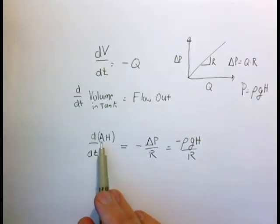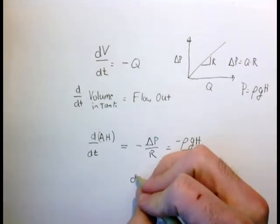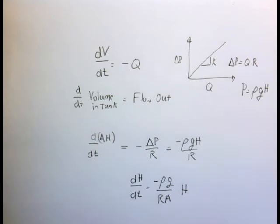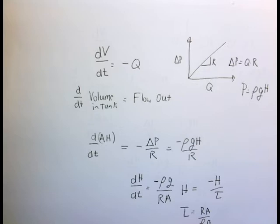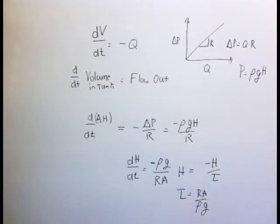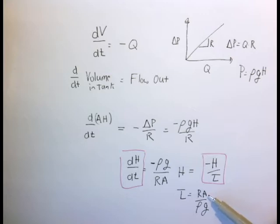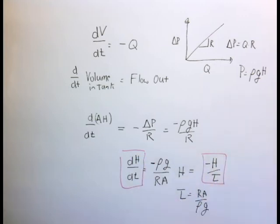Since the area is constant, we can move it inside or outside the derivative, and we can rewrite the expression as: the time rate of change of height equals -ρg/(RA) times H, or equivalently, -H/τ, where τ = RA/(ρg). Tau has units of time, and the time constant increases as resistance goes up and as the cross-sectional area of the tank goes up — a big tank or high resistance takes a long time to drain.